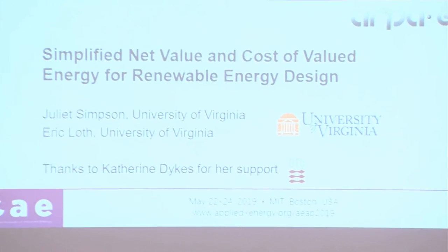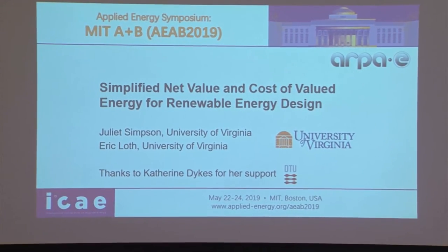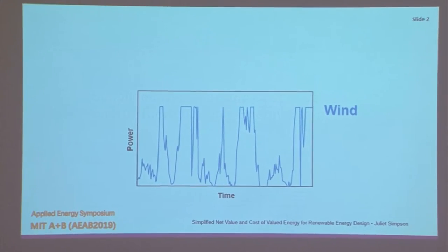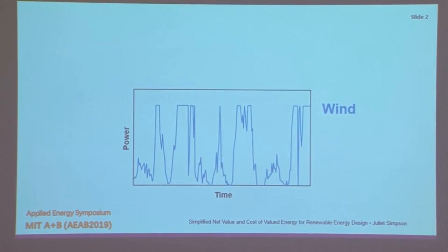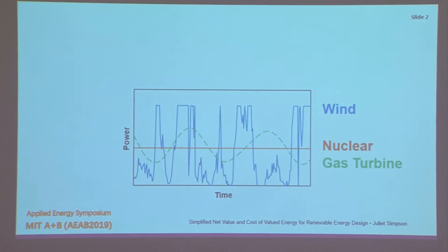Today I'm going to be asking us to kind of stop and think a little bit about the economics and the value of those technologies. If we start by thinking about the power output over time of a typical renewable system — for example, looking at wind — the problem that we always face is that this output is variable. The value to the grid of this type of output is very different than the value of something that's baseline and steady, like old-school nuclear power, or something that's able to load follow, like a gas turbine.